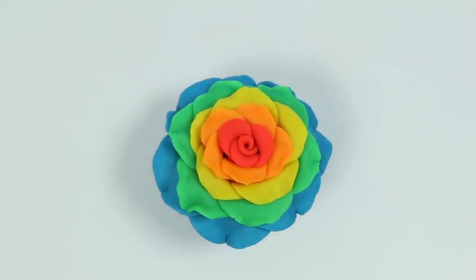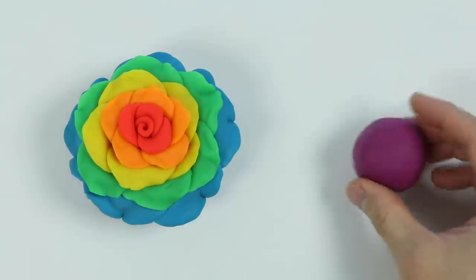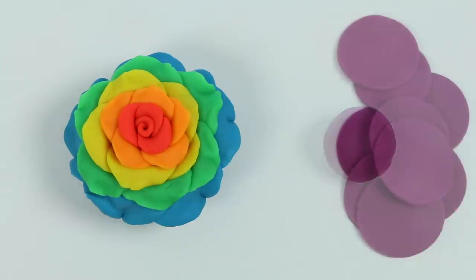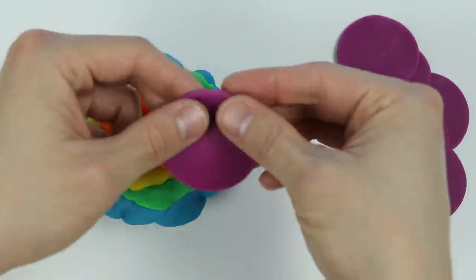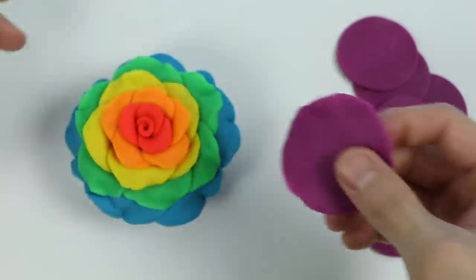Perfect, one more color to go. Let's make purple rose petals. Let's wrap these around the blue petals. Hang tight for a bit while I make the cake look pretty.